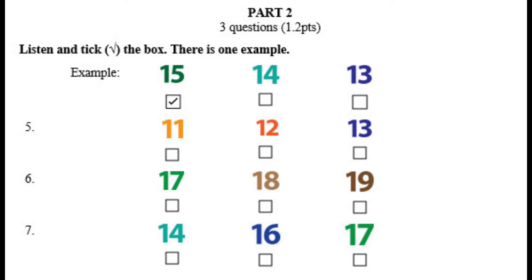Now you listen and tick the box. Five. How many books are there? Thirteen books. Six. There are eighteen dogs. Eighteen? Okay. Seven. How many circles are there? Fourteen circles.